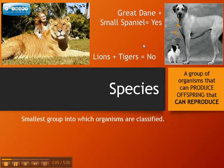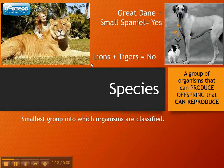Versus this liger over here. If you put a lion and a tiger together, you get what's called a liger, and that's what this picture here shows. You can see it has stripes like a tiger, but it has a mane like a lion. A lion and a tiger mating together can actually have kids — they can have ligers — but the ligers are sterile; the ligers cannot have kids.